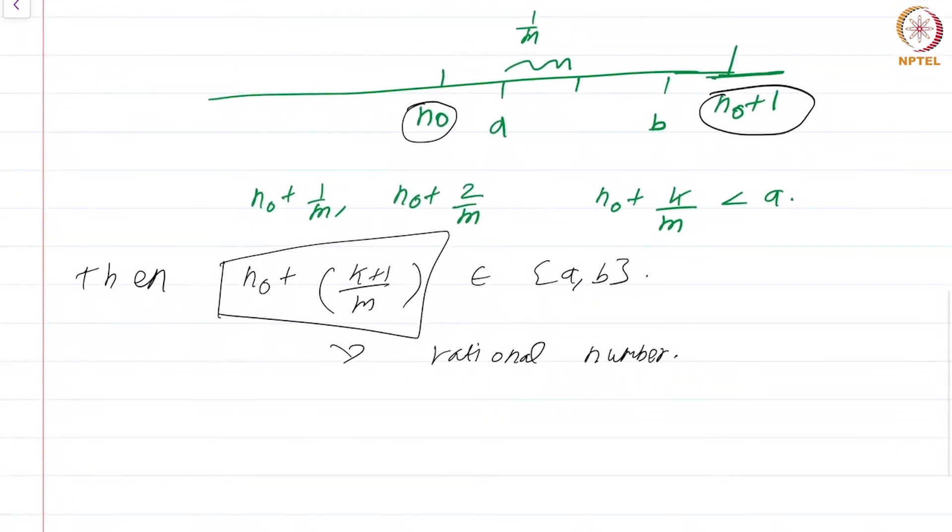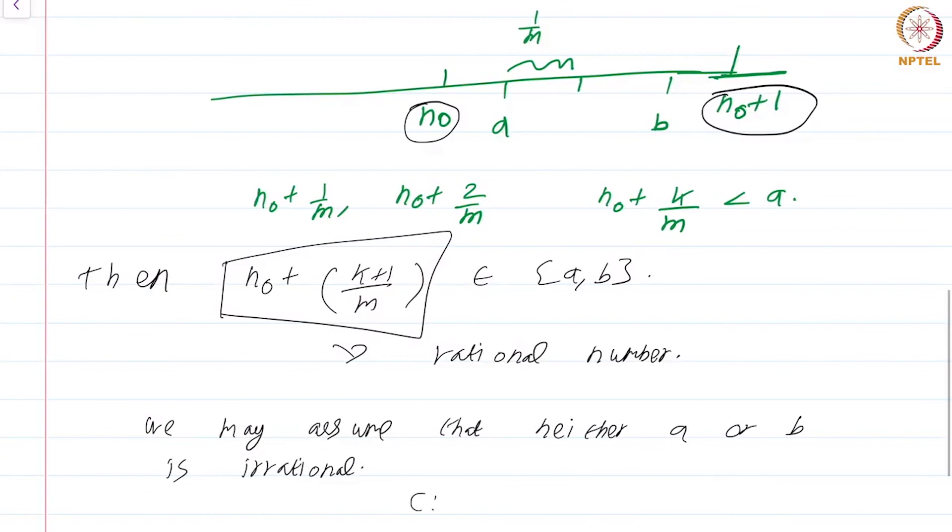Now, what about the irrational case? That is even simpler. We may assume that neither a nor b is irrational. For the same reasons that we made an analogous assumption, then c which is defined to be (a+b)/√2 works. I leave it to you to check why this works. It is rather straightforward.